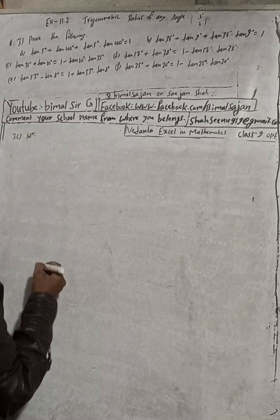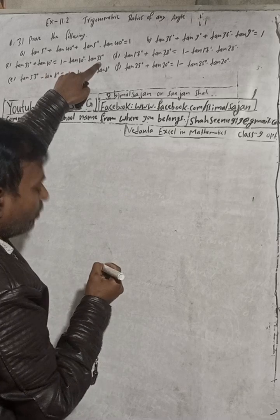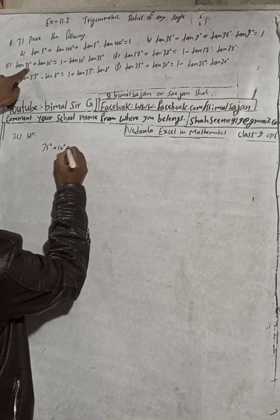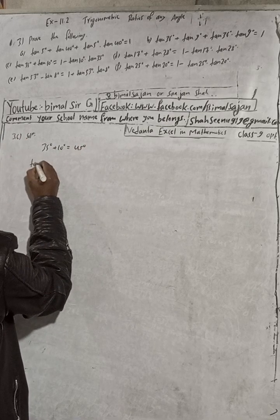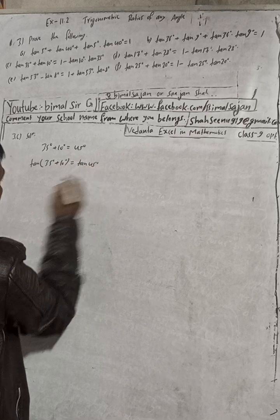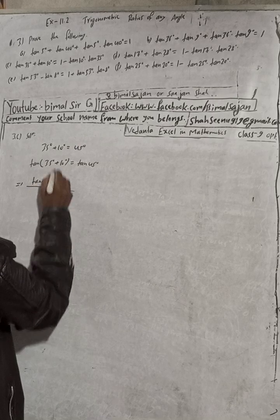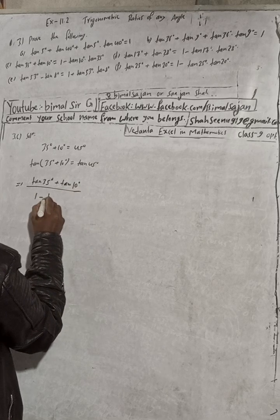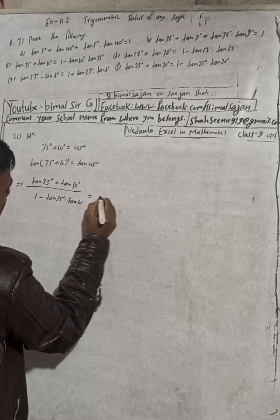Part C: Prove tan35° + tan10° = 1 − tan10°·tan35°. We observe 35° + 10° = 45°. Take tan both sides: tan(35° + 10°) = tan45°. Apply the tan(A + B) formula: (tan35° + tan10°) / (1 − tan35°·tan10°) = 1.